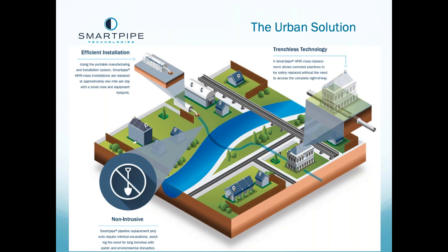Typically, the right of ways would require shutting down streets, causing chaos to traffic, restricting access to businesses, schools, and residences. SmartPipe requires only an entry point and an exit point. We're not shutting down streets or disrupting traffic. We're setting up a portable factory in the city close to the pipeline sections we're replacing — in parking lots, side avenues, and so on.